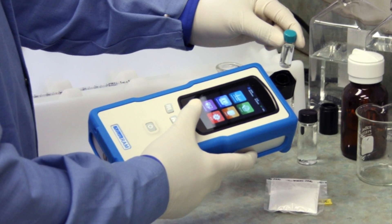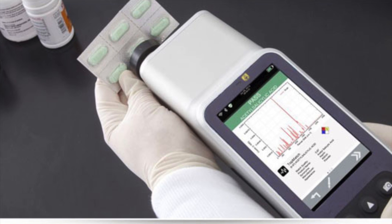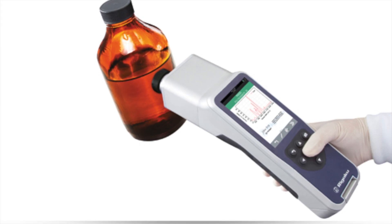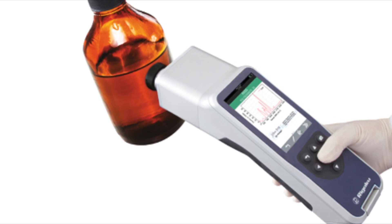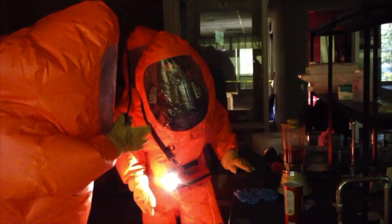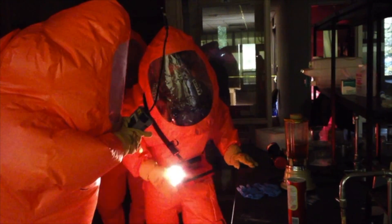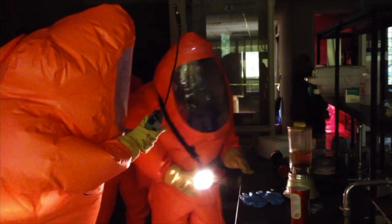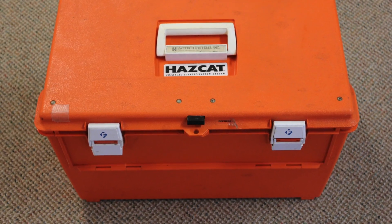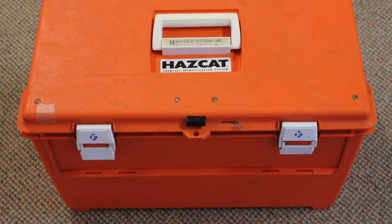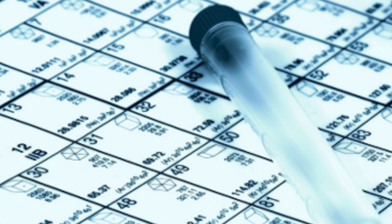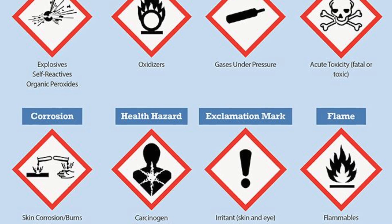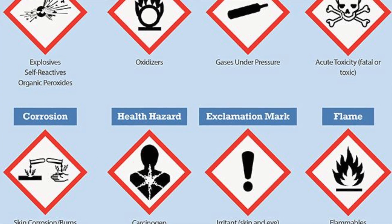Raman and FTIR technology today is incredible. The Raman can shoot a laser through a container to identify the contents. However, if you don't have an extra $60,000 for the Raman or $4,500 for the Hazcat kit, I can show you how to identify the chemical properties and hopefully the risks to the responders from any unknown liquid.